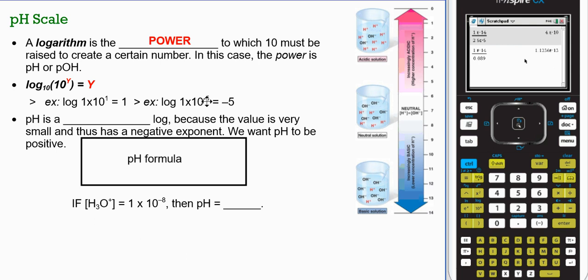So if my log 1 times 10 to the first gives us a pH of 1. Log 1 times 10 negative 5 gives me negative 5. And so it's basically pulling that exponent down. Now keep in mind, when we do this, this is going to be a negative log.